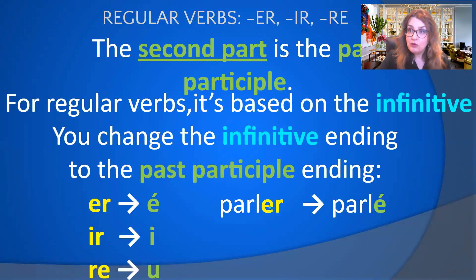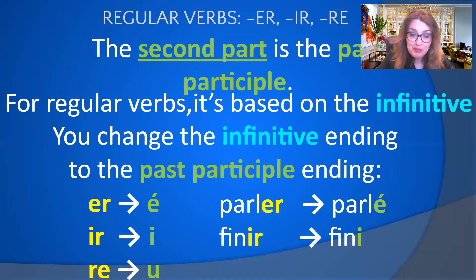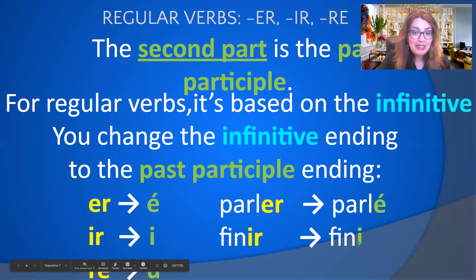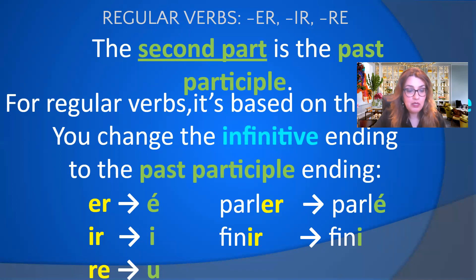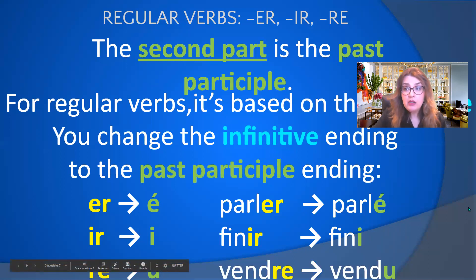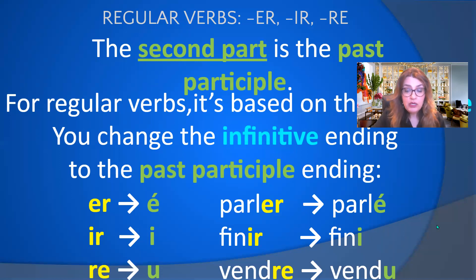Parler is a regular verb meaning 'to speak.' It ends in ER — we drop the ER and replace it with é (e accent aigu) to get the past participle. Finir is a regular IR verb — we drop the IR and replace it with I to get fini. Vendre means 'to sell' — it's a regular RE verb, so we drop the RE and replace it with U to get vendu.